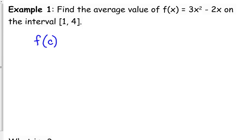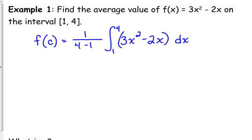So, f(c) is equal to 1 over 4 minus 1, times the integral from 1 to 4, of 3x² minus 2x dx. Sometimes they'll put it in parentheses, just, anyways, it's just that neutrality to show that you're going to integrate both those pieces.